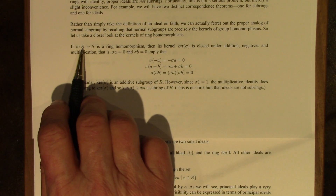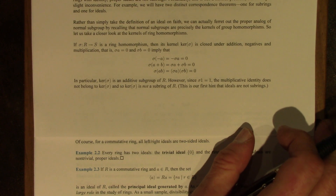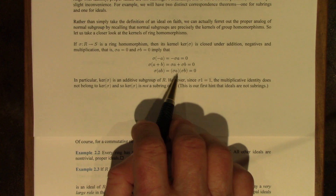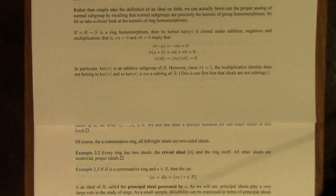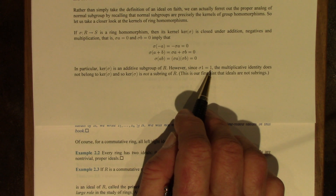If sigma is a ring homomorphism from R to S, then its kernel is closed under addition, closed under negatives, and closed under multiplication. In particular, the kernel of sigma is an additive subgroup of R. But since sigma of 1 equals 1, the multiplicative identity doesn't belong to the kernel. So the kernel is not a subring of R. That's our first hint that ideals — kernels of ring homomorphisms — are not subrings: they don't contain the identity.